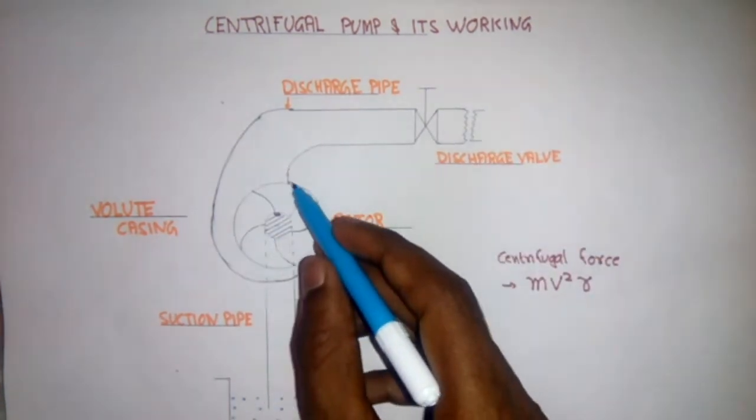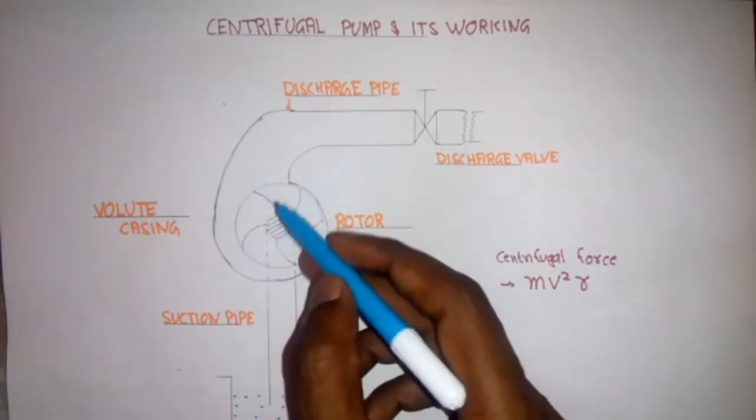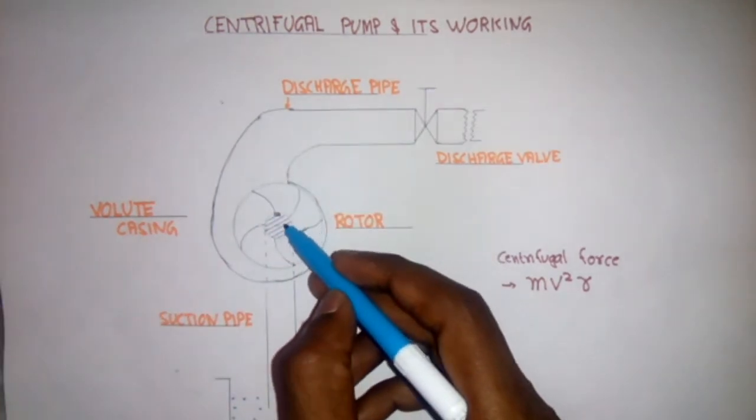Then, rotor. The rotor is the main rotating part inside the casing of centrifugal pump and it is having an eye.